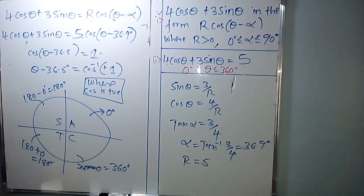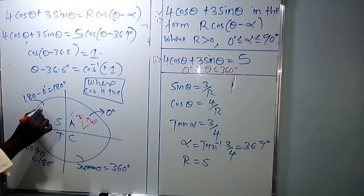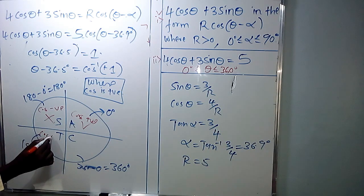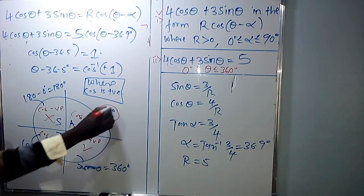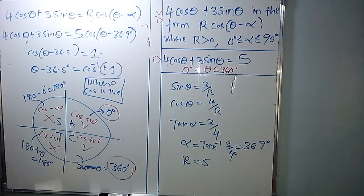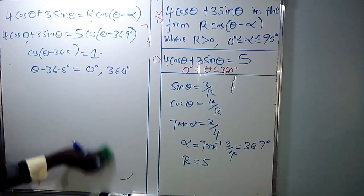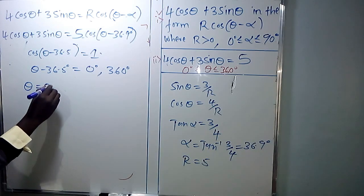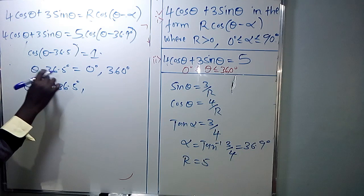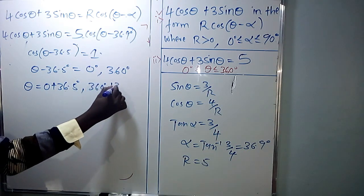In the first quadrant all ratios are positive, so we need 0 degrees. In the second quadrant only sine is positive — we don't need that angle. In the third and fourth quadrants only sine or cosine is positive respectively, so we also use 360 degrees. Therefore theta minus 36.9 degrees is either 0 degrees or 360 degrees.